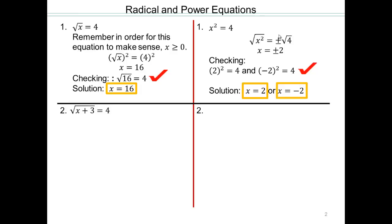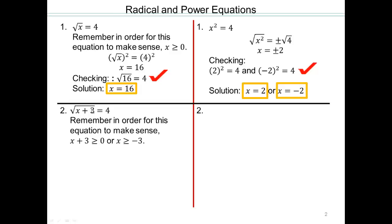Try that on your own — it's very much like the first example. In order for this equation to make sense, what restriction do we have? x plus 3 has to be greater than or equal to 0, meaning x has to be greater than or equal to negative 3. Just remember that. Square both sides, solve for x, and then check your answer.